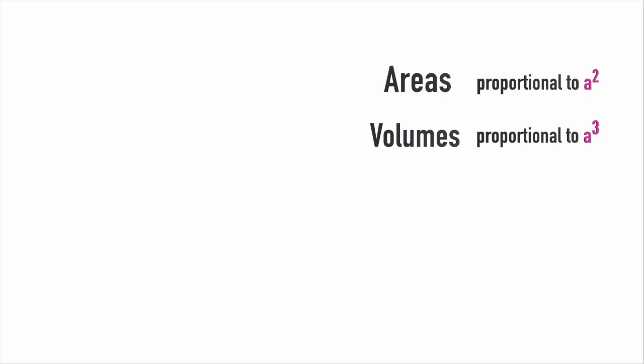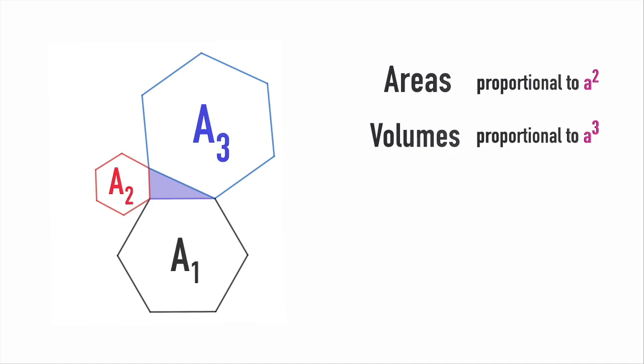It is obvious that areas of any regular polygons built on the sides of a right-angled triangle will always add up like they do in classic Pythagoras. To me, this shows the essence behind this famous formula.